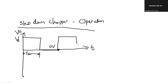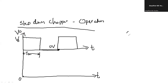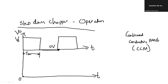Whenever switch is on again, the input voltage comes across the output. Now let us talk about the current. Your buck converter, your step-down chopper, will be operating in the continuous conduction mode (CCM).